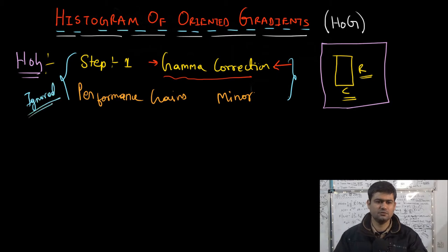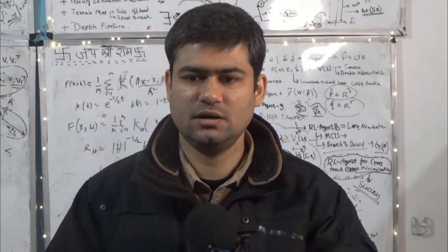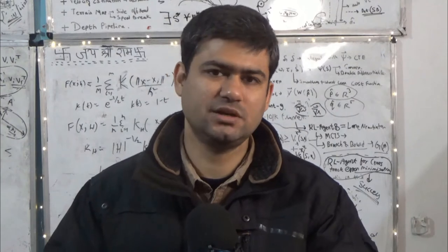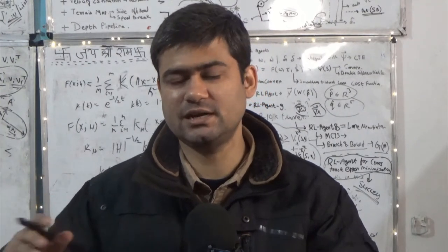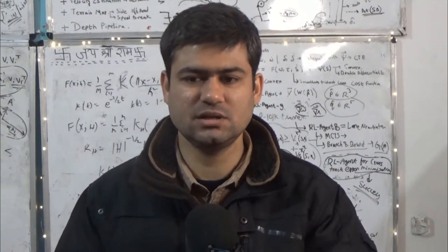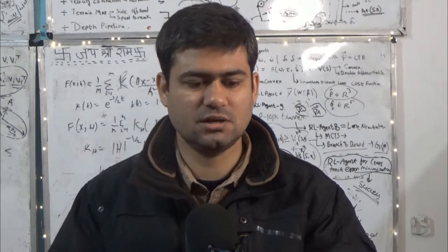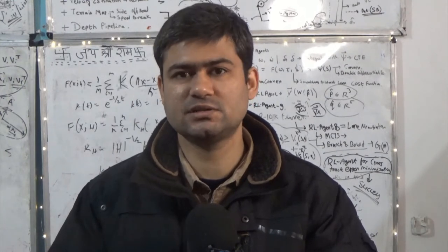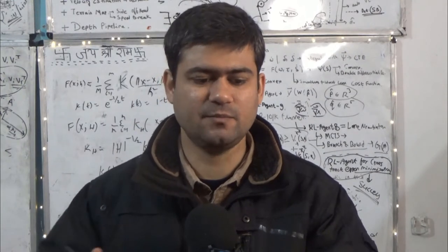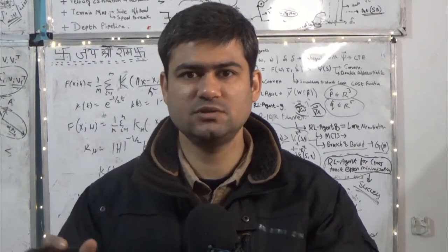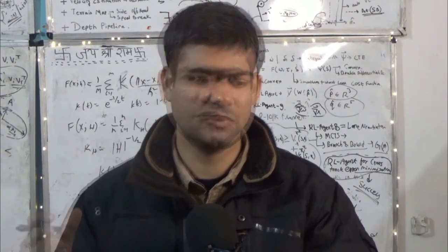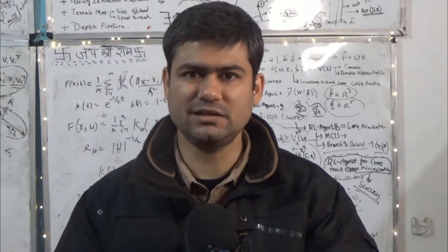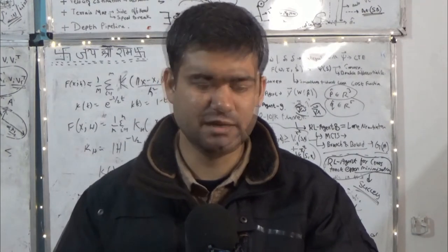If you follow the original paper, the first step is to apply gamma correction to the image patch — or you can apply it to the entire image at once, similar to how in the BRIEF descriptor lecture we applied Gaussian smoothing to the entire image rather than to individual patches repeatedly.